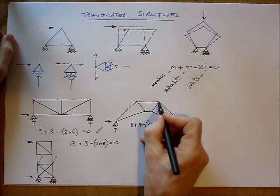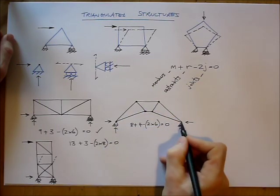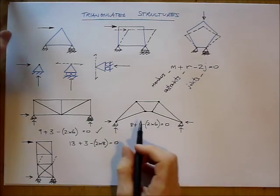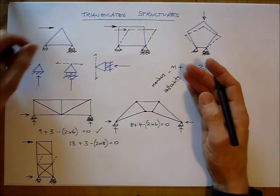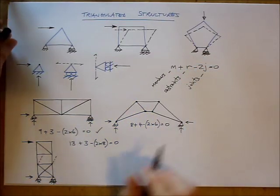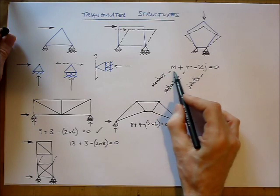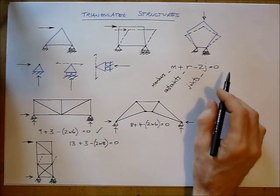We've got this kind of squarish shape in the middle, which is just going to, as I apply load, the whole thing is going to distort. So as well as checking for statical determinacy, using this equation, we must also check for mechanisms.